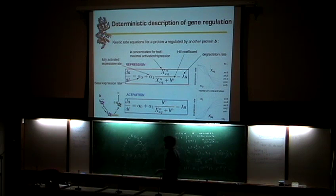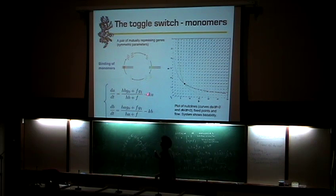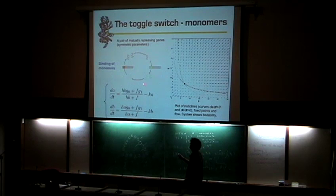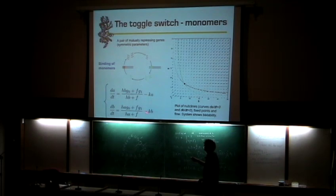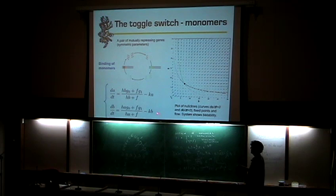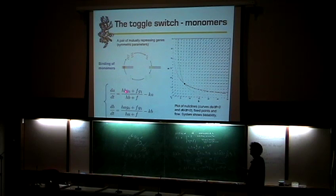This is also from yesterday - this is a system with two genes that repress each other. Here are those equations: you write both equations for protein A and protein B, where protein A negatively regulates protein B, and protein B negatively regulates protein A. If you have binding monomers, the exponent over there is one and you only have one stable solution. These lines are the nullclines - where the derivative equals zero - and where they intersect are the fixed points, the stable points.